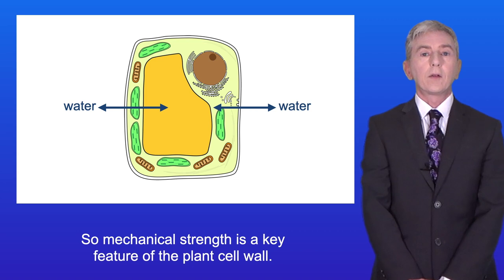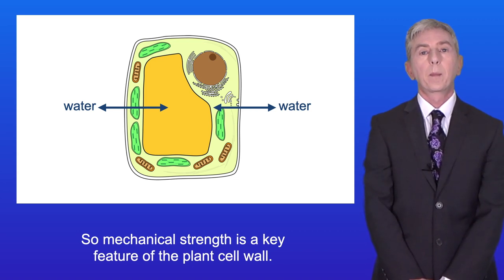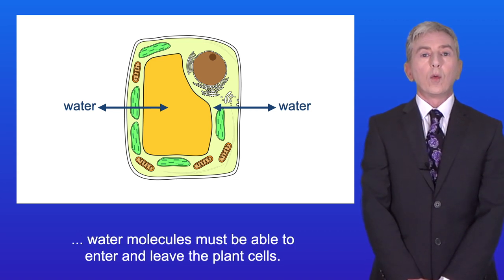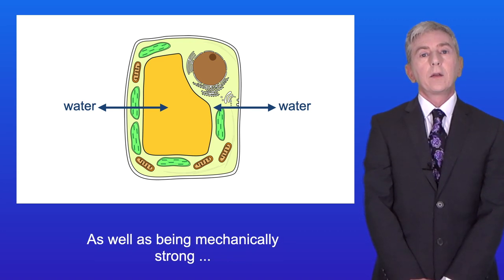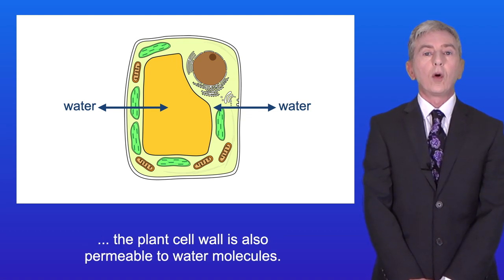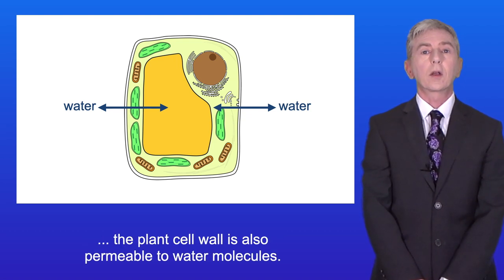So mechanical strength is a key feature of the plant cell wall. Now as we said before water molecules must be able to enter and leave the plant cells. So as well as being mechanically strong the plant cell wall is also permeable to water molecules.